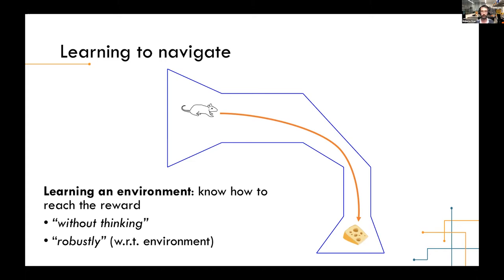This needs to be very fast — the learning can take quite some time to learn the environment, but then the control action needs to be very fast. So how are we approaching this?